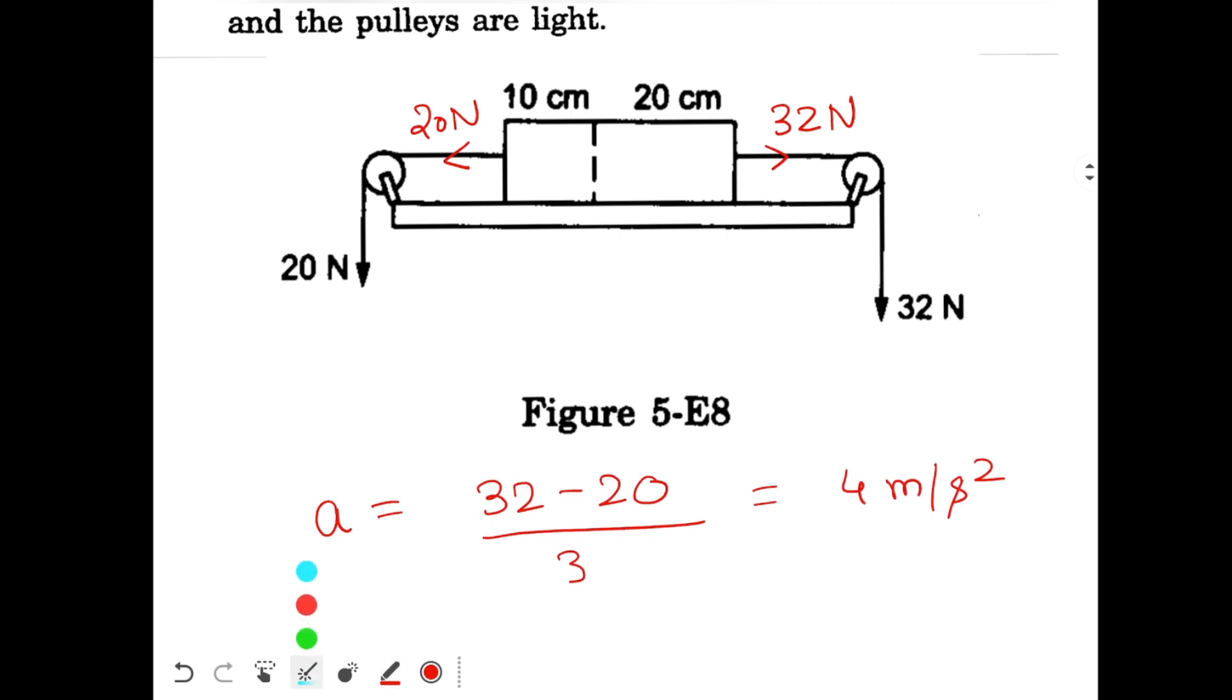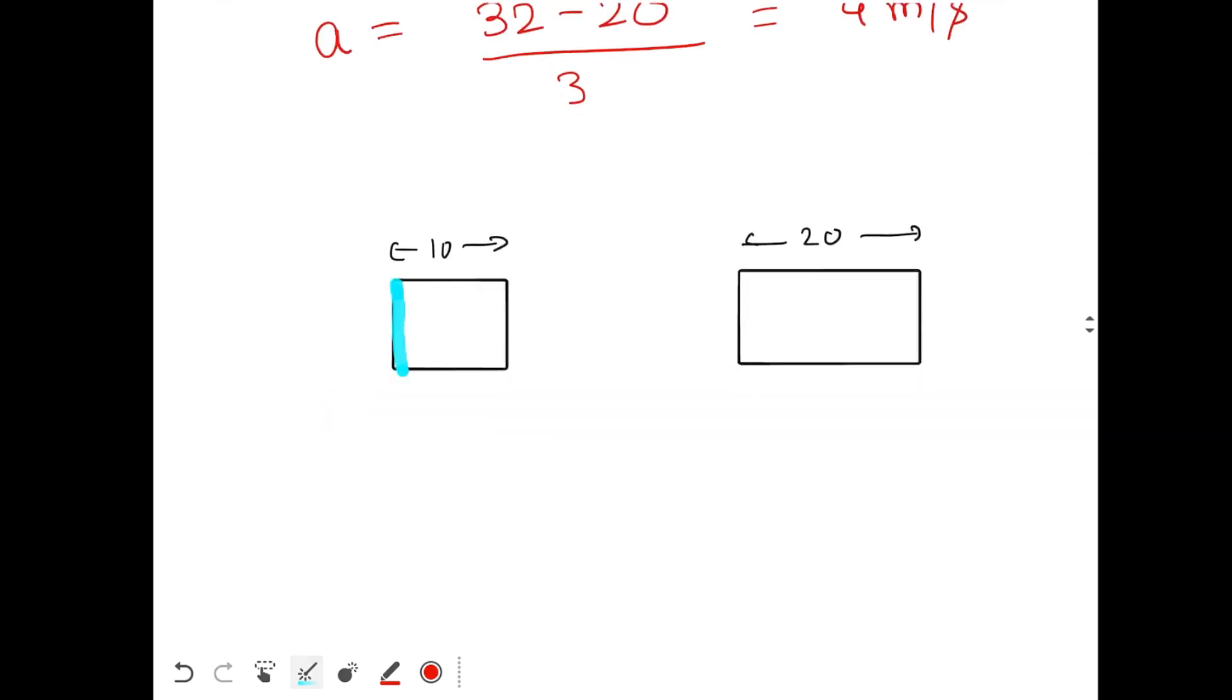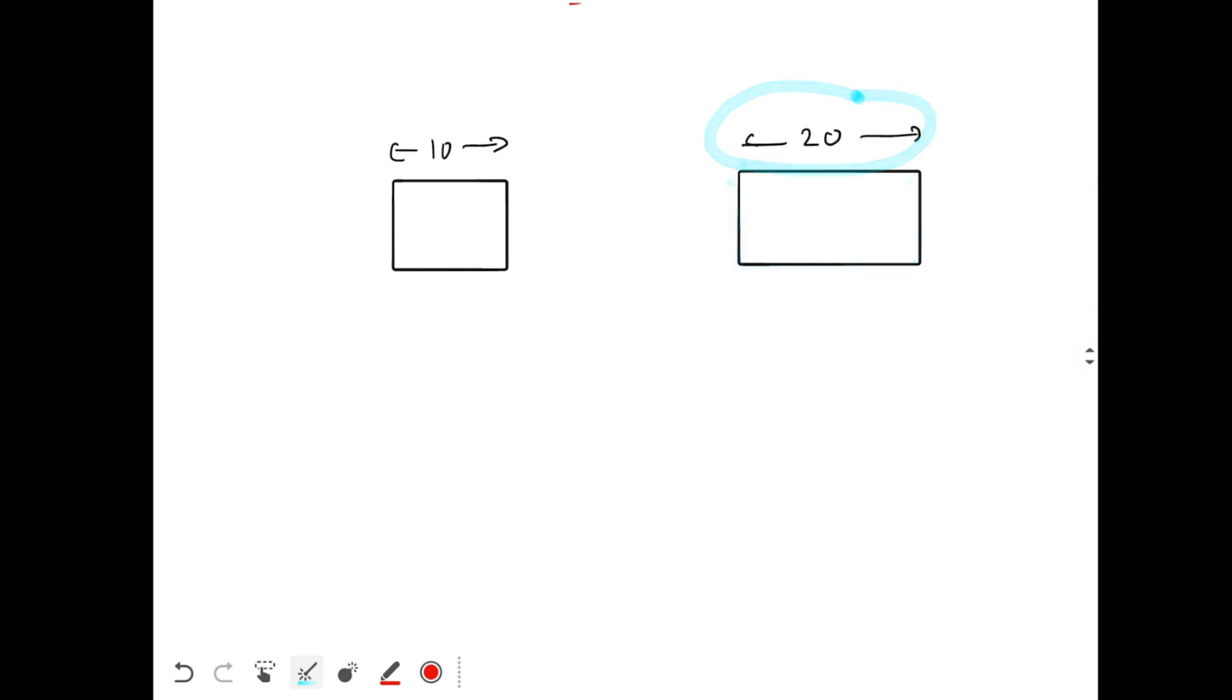Now, let's split the block from this section. We will have two different blocks now. This is the left hand block of length 10 cm and this is the other block of length 20 cm. What are the masses of these blocks? Let's apply unitary method. For 30 cm length, mass is 3 kg. So for 10 cm length, the mass will be 3 by 30 into 10, that will give you 1 kg. Similarly, for 20 cm, you will get 2 kg mass.